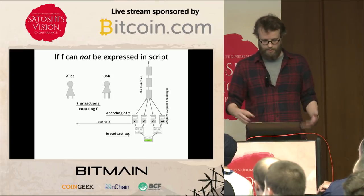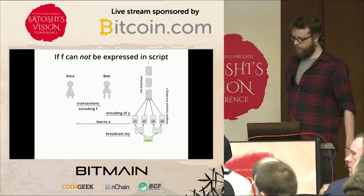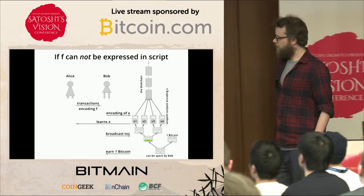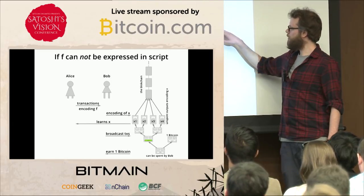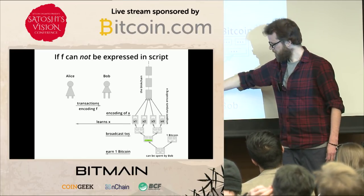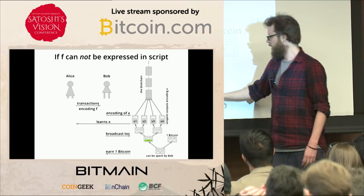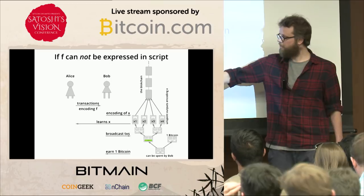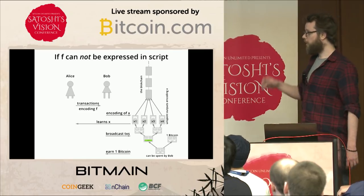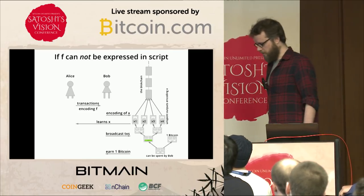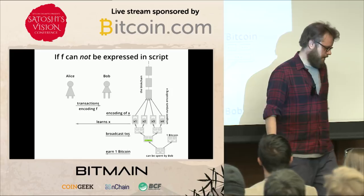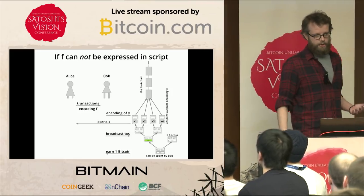Since x is in the language, Bob can produce the reward output. He uses a second transaction from Alice that spends an output containing one bitcoin that Alice paid for, plus the reward output, creating a transaction that pays out to Bob. At this point Bob earns the one bitcoin — no trust required. In the rest of the talk I'll zoom into this picture and explain exactly how the set of transactions is constructed.